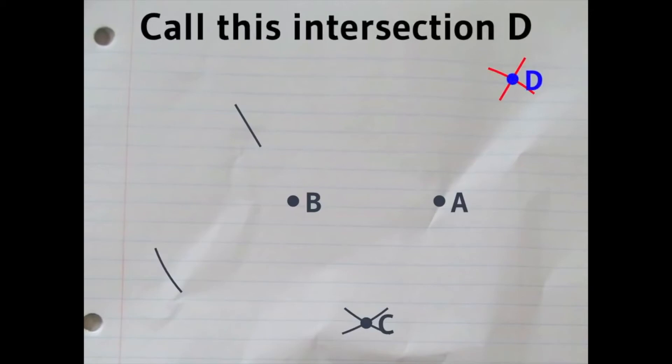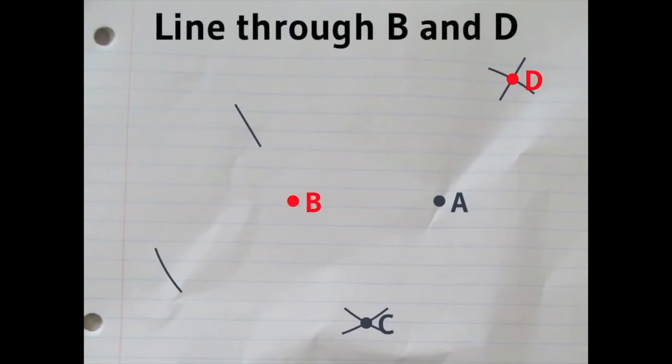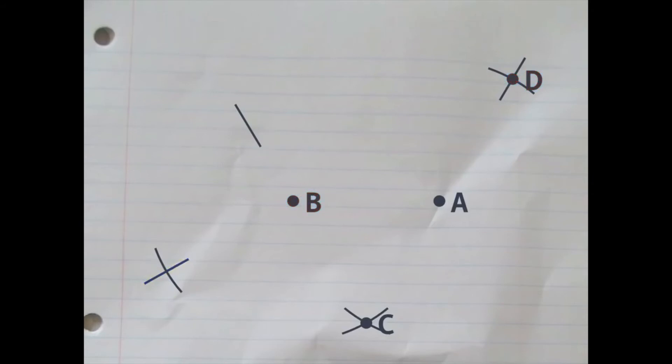Now, don't put the ruler away. The very next step, you draw a line through B and D, which will cut that little piece of circle down in the bottom left of the page. Let's give that point a name. We'll call it E.